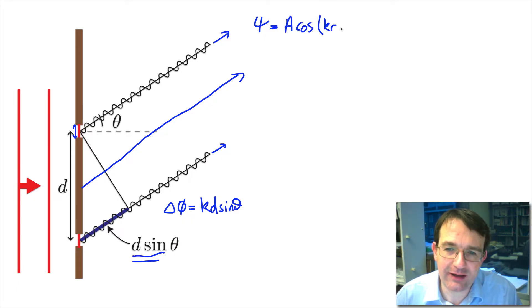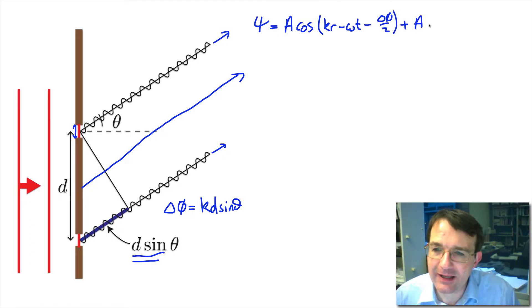When I write down our wave, our amplitude, it's going to be a times the cosine of kr minus omega t minus delta phi over 2, plus a times the cosine of kr minus omega t plus delta phi over 2.